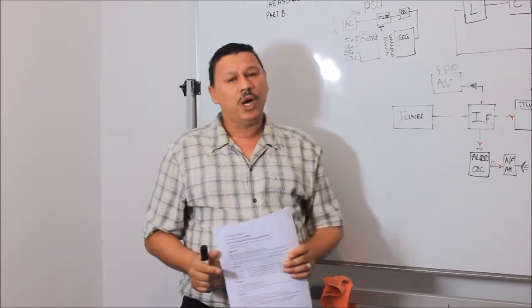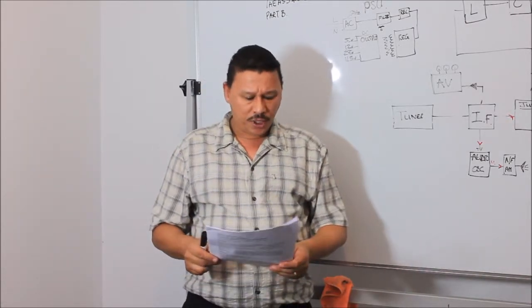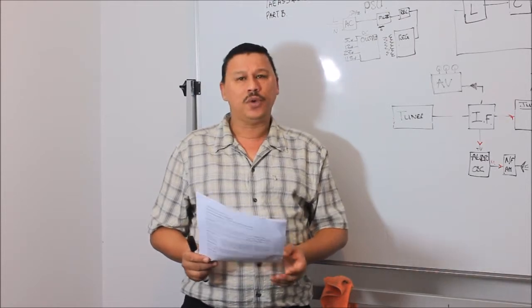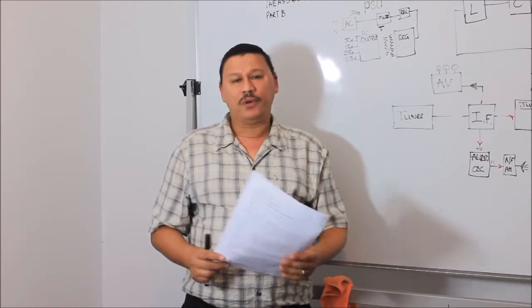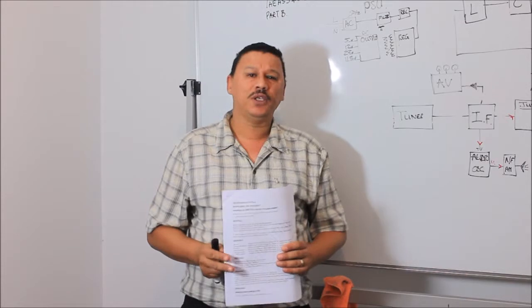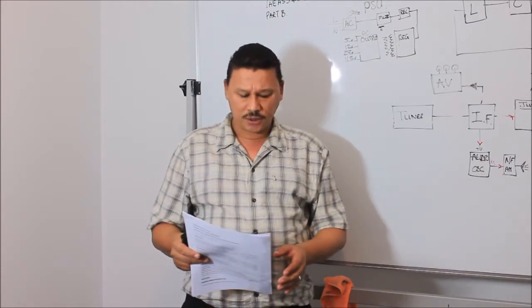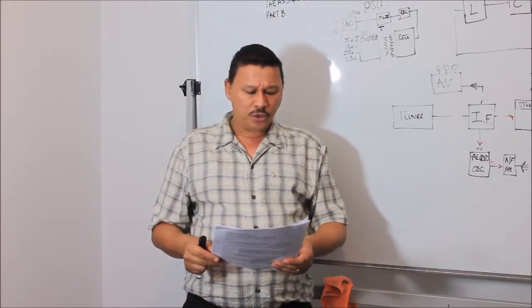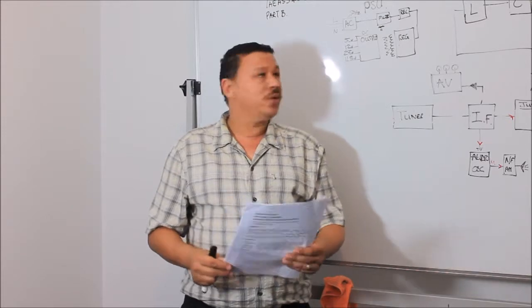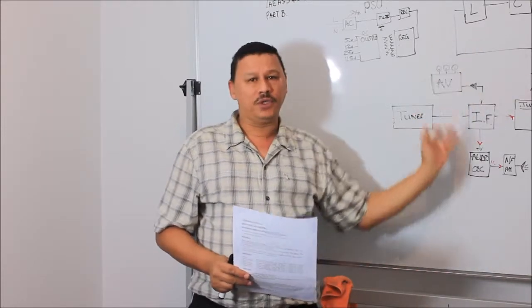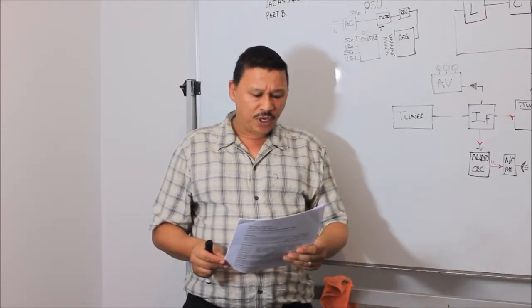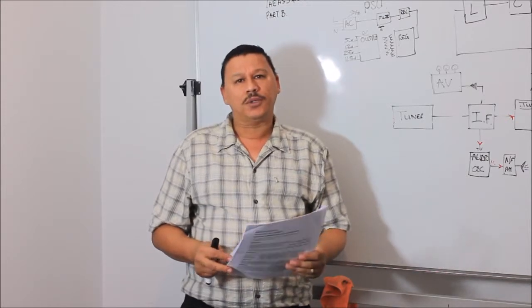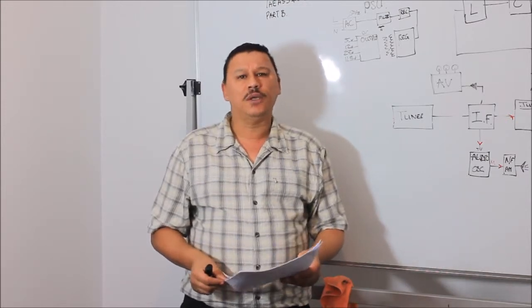So what we will cover, our objectives today is three elements, element one, two and three. Element one refers to the safety aspects of working with televisions. Element two will work with the knowledge of the television and element three would look at scenarios, typical faults that you would get in a television.